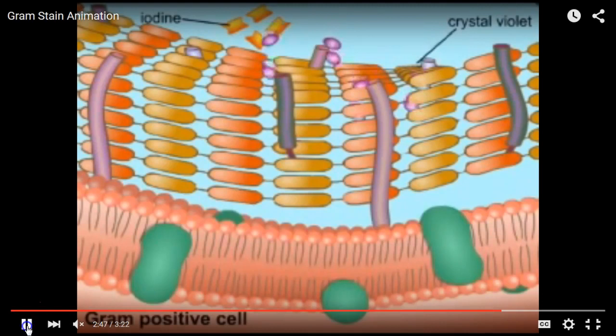Gram-positive cells all have a cell membrane, represented by the phospholipid bilayer with proteins embedded in it that work as receptors and channels, allowing the cell to respond to its environment and bring stuff in and out. Outside of that is the cell wall. For bacteria, the cell wall is made out of a special substance — do you remember what? It's a defining characteristic of the domain bacteria. It's peptidoglycan.